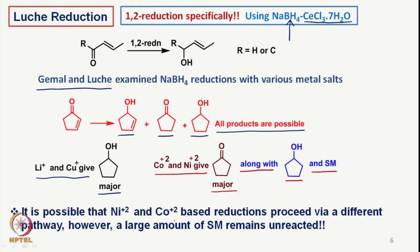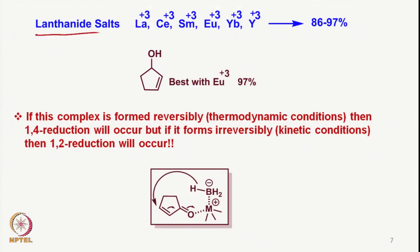It is possible that Ni(II) and Co(II)-based reductions proceed via a different pathway, but since a large amount of starting material (SM — the alpha,beta unsaturated carbonyl compound) remains, it is not a very good reaction. With lanthanide salts — lanthanum, cerium, samarium, europium, ytterbium, yttrium — the reductions all gave good yields from 86 to 97%. Particularly, it was found that cerium(III) gave the corresponding allylic alcohol in about 97% yield.